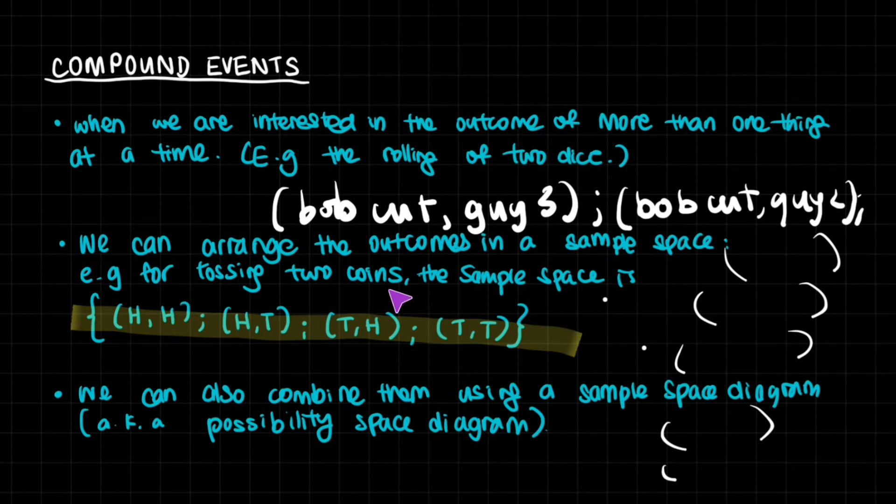We can also do this for tossing two coins at the same time. So let's say you tossed two coins. For each coin, there are two possible outcomes. There's a head and a tail. And so we want to see what the probability is, for instance, to get two heads.